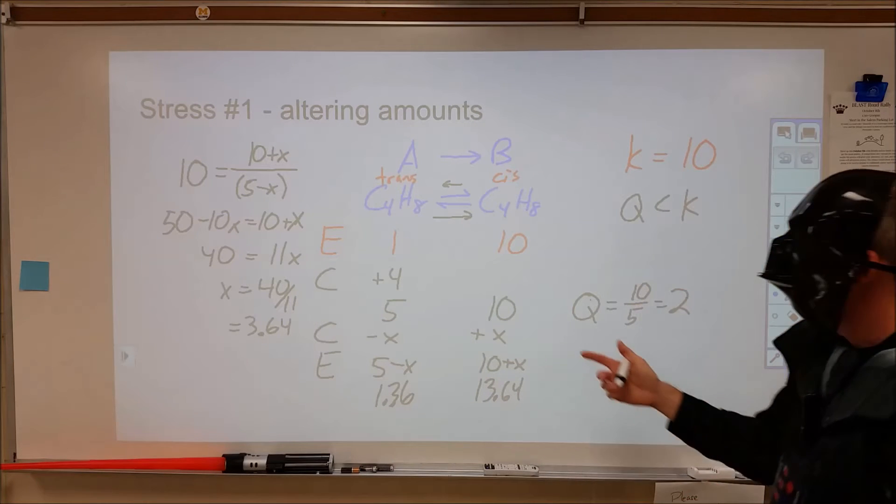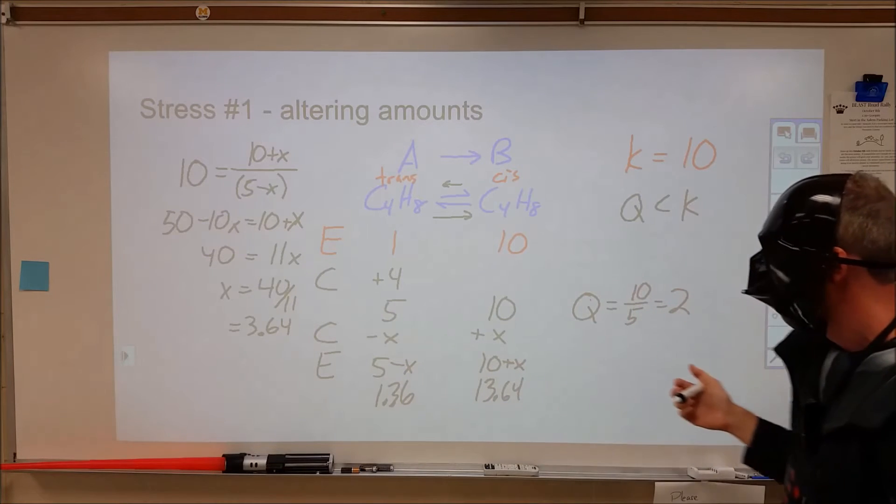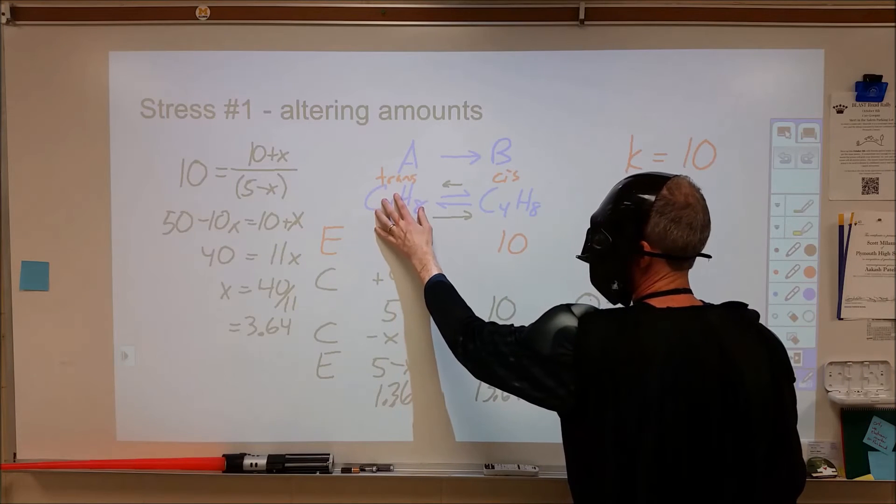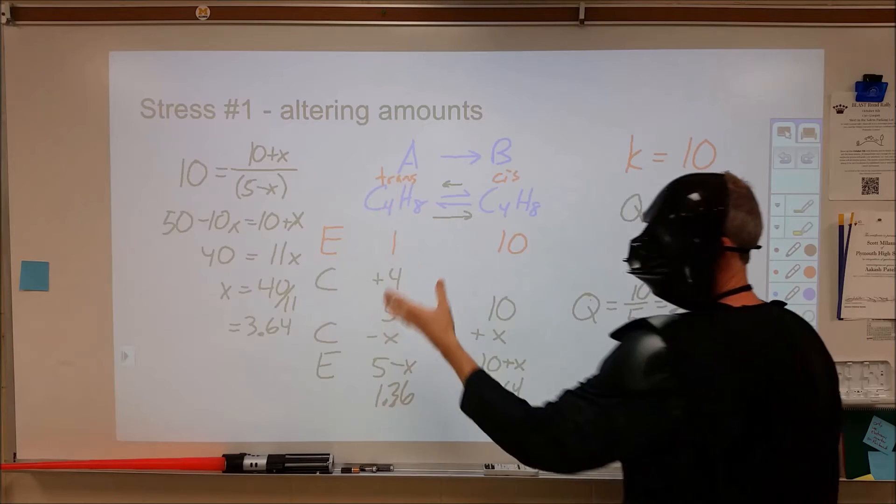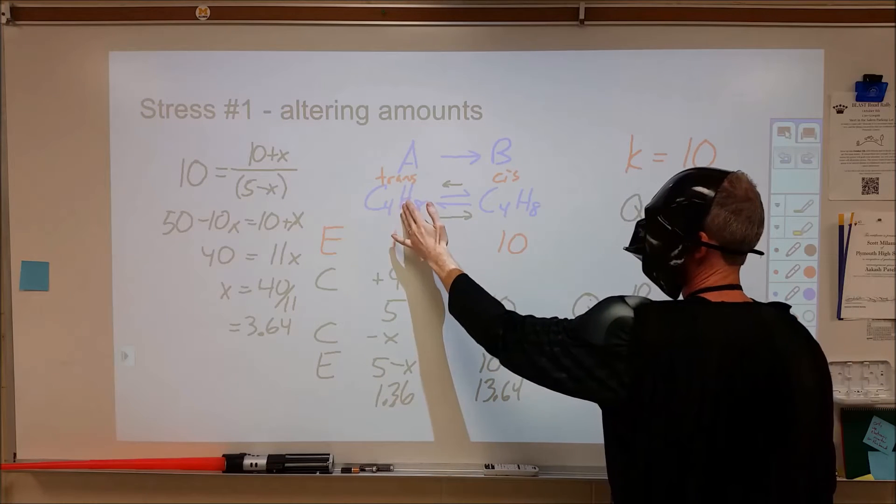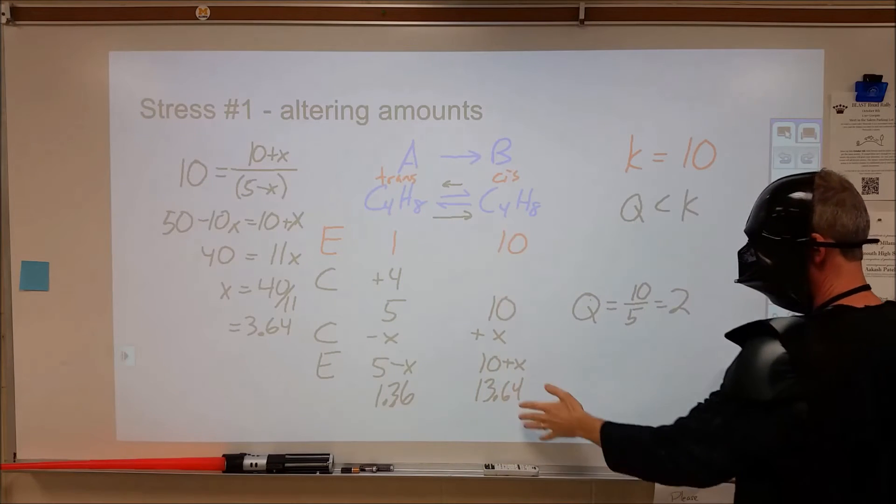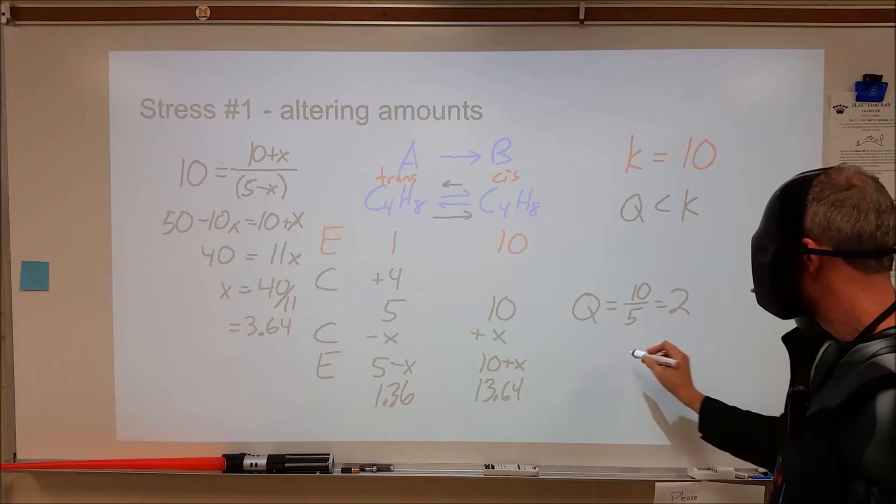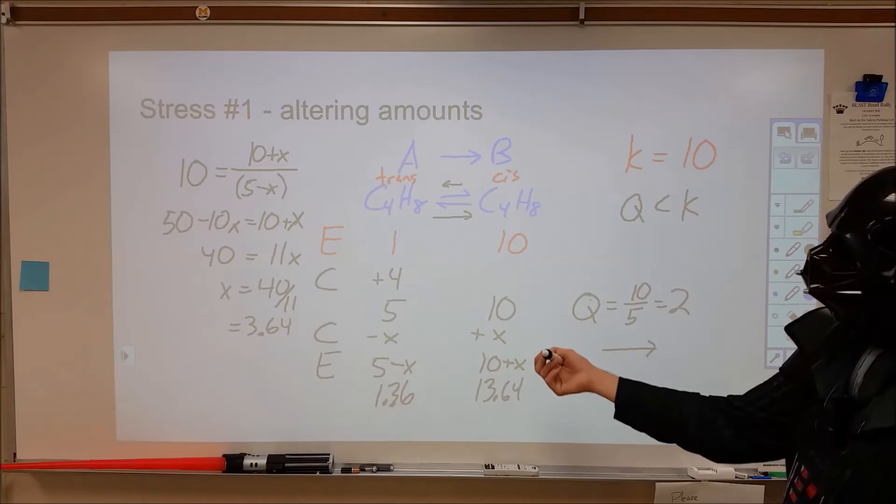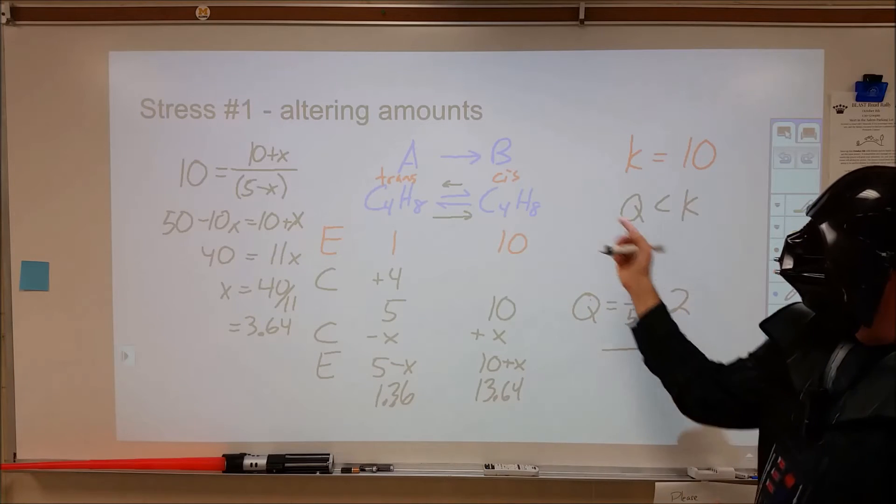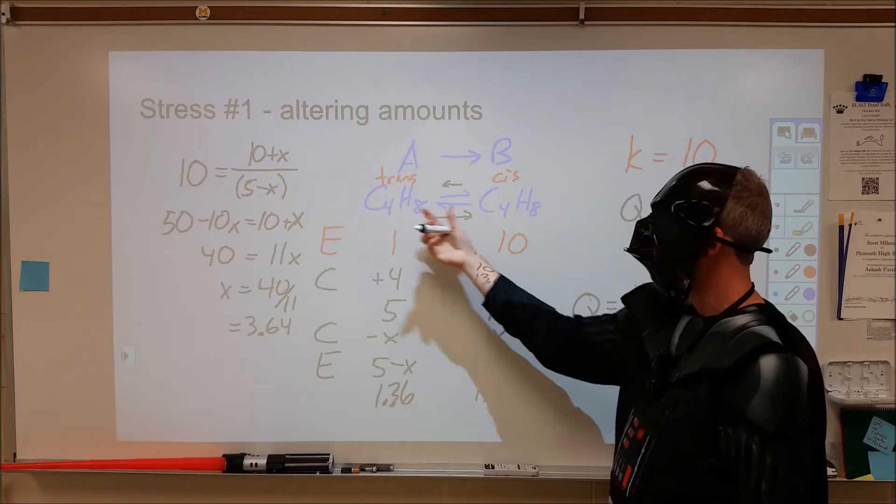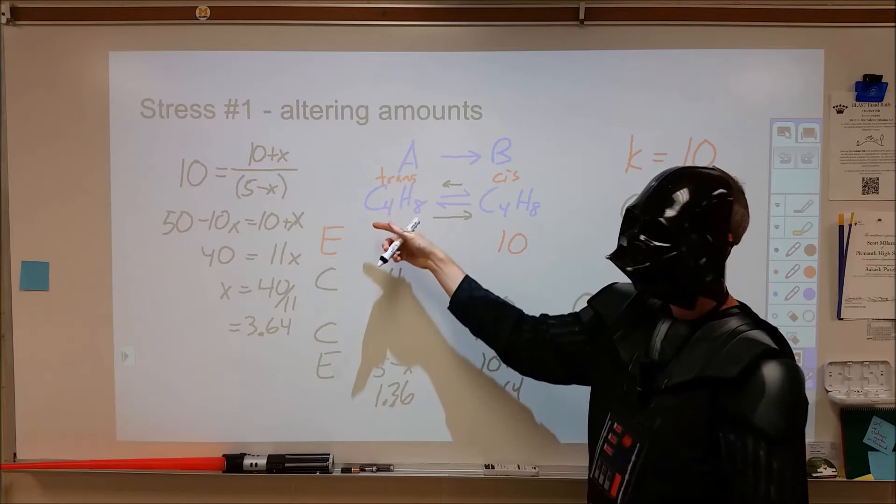Now, in order for that to happen, we had a shift to the right. When we added too much reactant, we had a stress on the system where there was too much of this and the consequence of that was that more of this was made and some of this new stuff was used up. We end up with a greater amount of that and we consider that a shift to the right. In addition to adding reactant, we could also add product, which would cause a shift to the left. We could remove product, which would cause a shift to the right. We could remove reactant, which would cause a shift to the left.